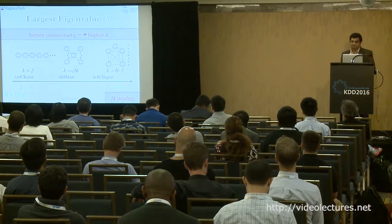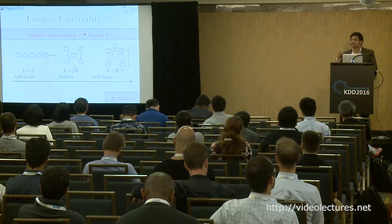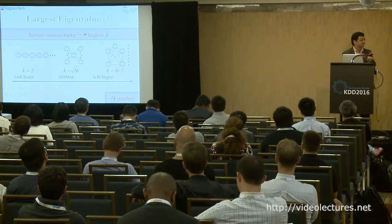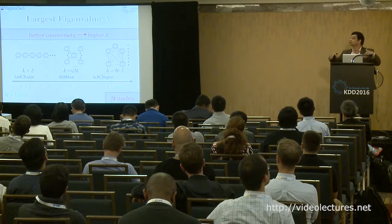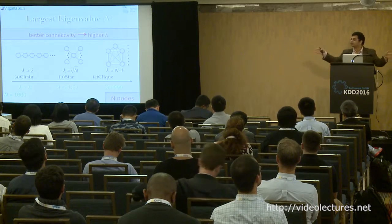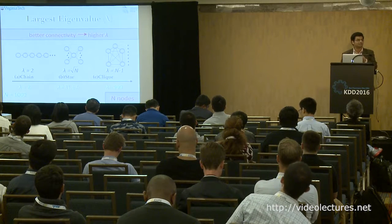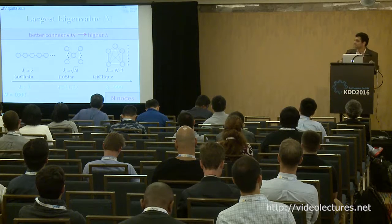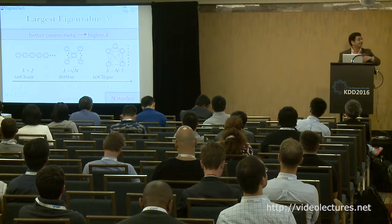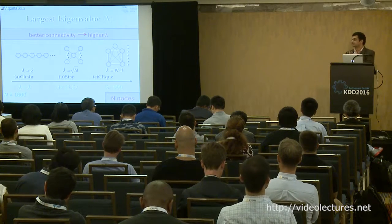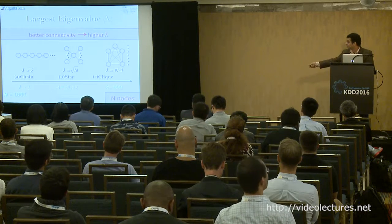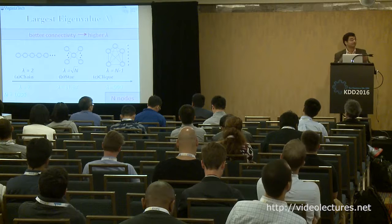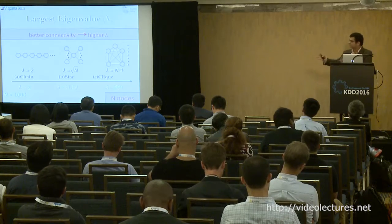For specific graphs: a chain has roughly constant lambda — adding nodes to a chain doesn't change its fundamental characteristic. A star is more flammable — infecting the center quickly reaches the rest of the network — and lambda grows as root-n. A clique is the best case for the virus — infecting anyone means everyone can get infected — and lambda grows as order n. This is borne out: chain lambda is constant, star grows as √n, clique grows as n, confirming clique as the best case.